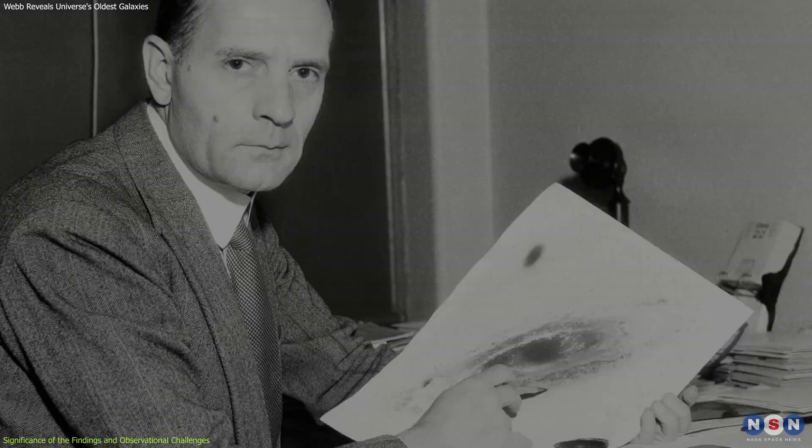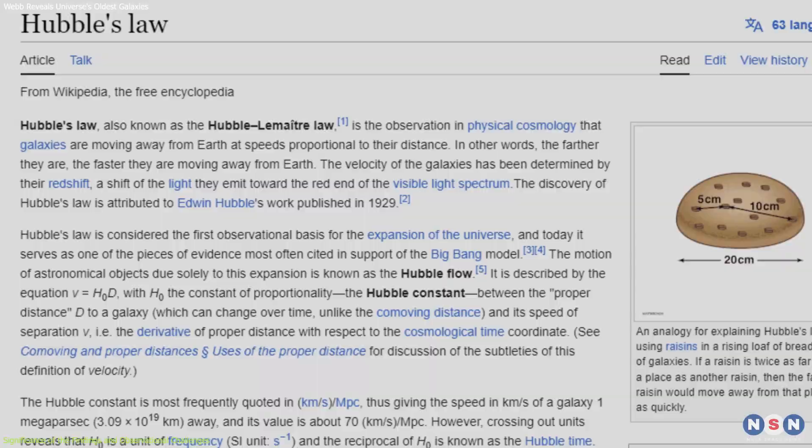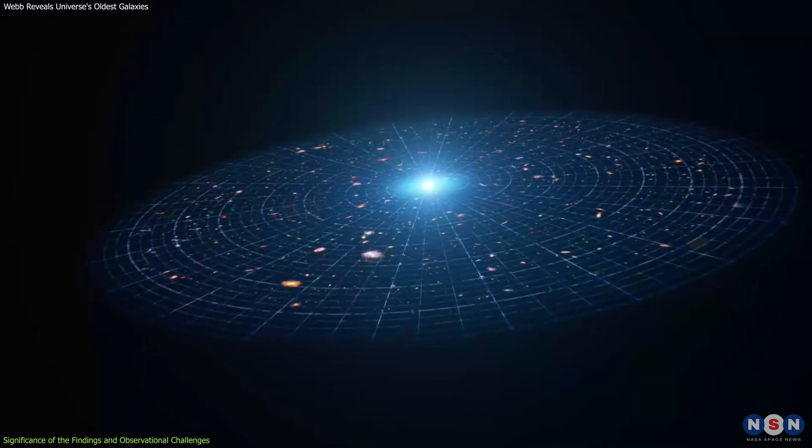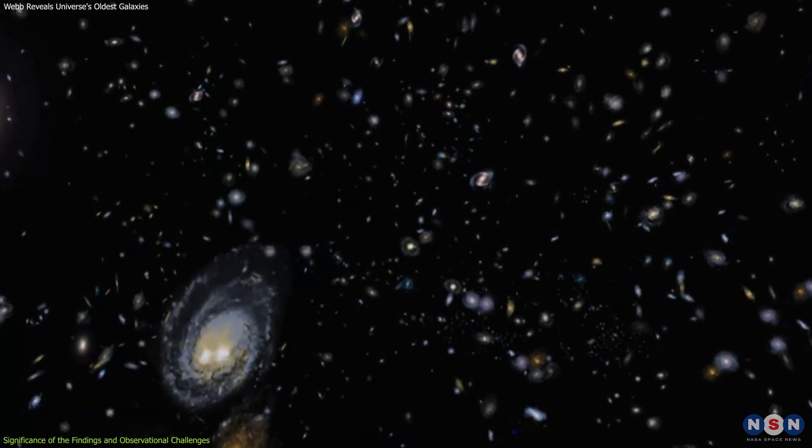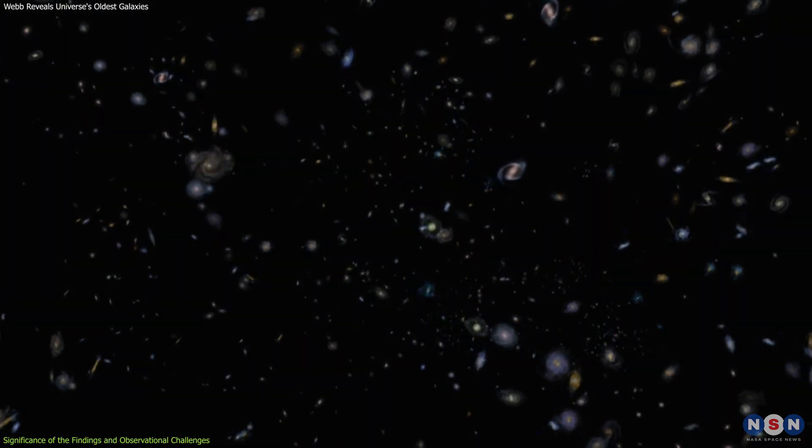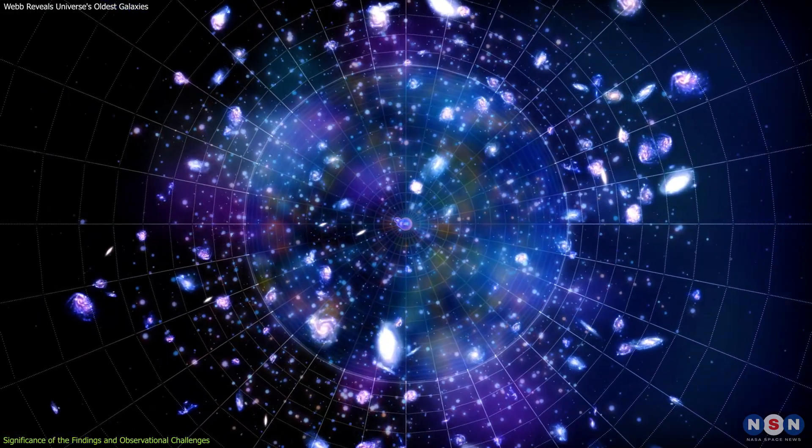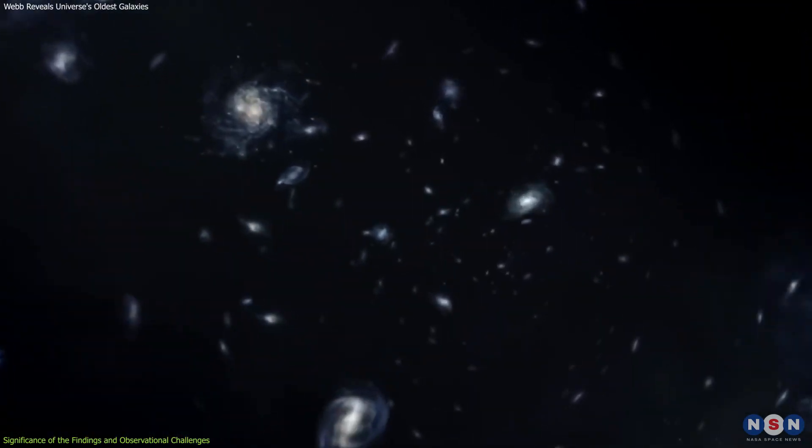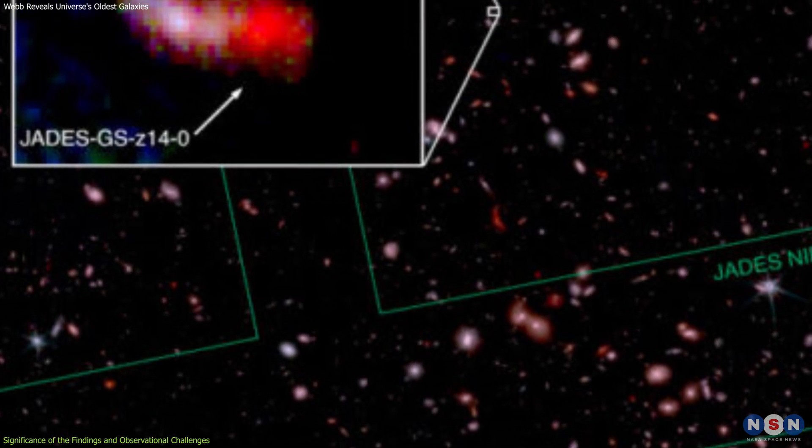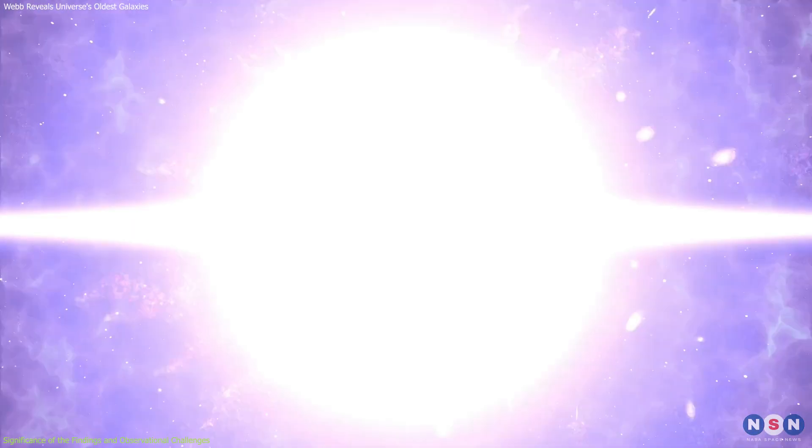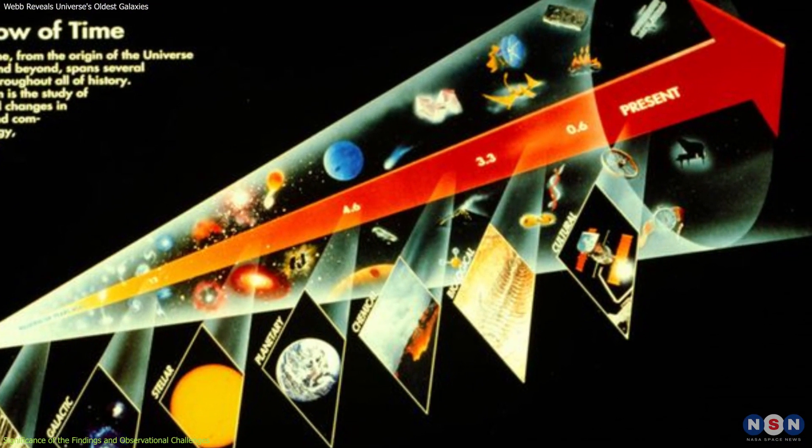Edwin Hubble's observations in 1929, encapsulated by Hubble's law, revealed that galaxies are receding from us at speeds proportional to their distance. This was the first evidence that the universe was expanding. By measuring the redshift of galaxies, astronomers can determine how far back in time they are looking, essentially peering into the universe's infancy. The discovery of these two extremely redshifted galaxies, dating back to just 300 million years after the Big Bang, challenges the conventional timeline of cosmic evolution.